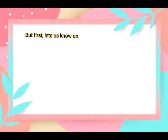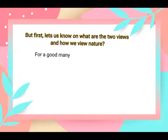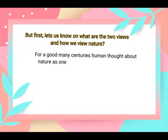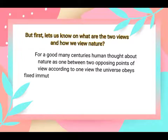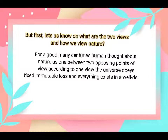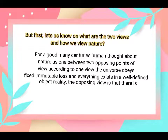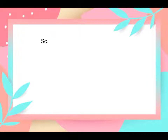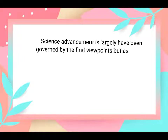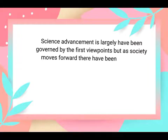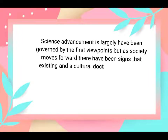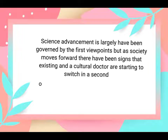First, let us look at the two views on how we view nature. For a good many centuries, humans talked about nature as one between two opposing points of view. According to one view, the universe obeys fixed, immutable laws, and everything exists in a well-defined objective reality. The opposing view is that there is no such thing as objective reality — that all is flux, all is change. Science's advancements have largely been governed by the first viewpoint, but as society moves forward, there have been signs that existing cultural doctrines are starting to switch to the second way of thinking.